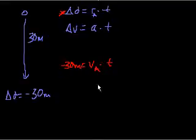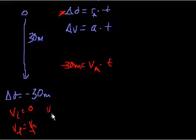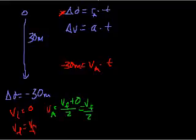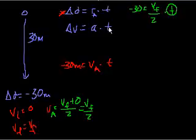What's the average velocity? It's the average of initial and final velocity. The initial velocity is 0, so the average velocity = (vf + 0)/2 = vf/2. Substituting: minus 30 = (vf/2) × t. We still have two unknowns, but if we write time in terms of final velocity using Δv = a·t: vf = minus 10·t, so t = minus vf/10. Now substitute that back in.